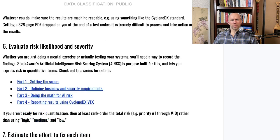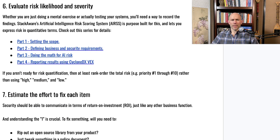Moving on to evaluating risk likelihood and severity — whether you're doing a tabletop exercise, penetration testing, or both — you'll need a way to record your findings. StackAware's AI risk scoring system provides a quantitative way to express AI risk in dollar terms. If you're not ready for full quantitative risk management, use an ordinal system such as priority number one through ten, rather than high, medium, or low — because with the latter, basically all risks end up being medium, which isn't effective for prioritization.